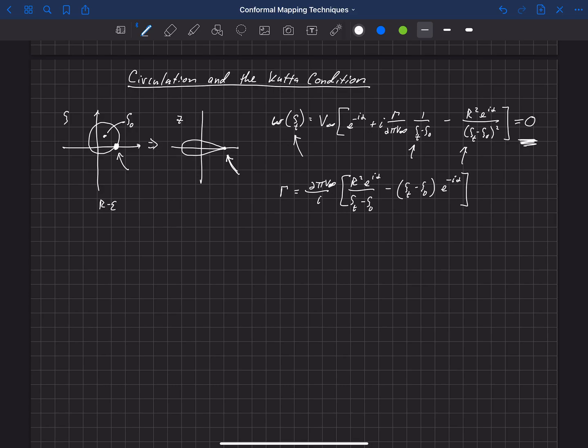So we solve for the value of gamma as a function of zeta t and zeta naught. But it will be helpful for us to recognize that zeta t is related actually to zeta naught because the trailing edge there depends on the size of the circle and the offset of zeta naught. So zeta t...